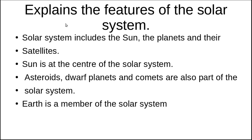Explain the features of the solar system. The solar system includes the sun, the planets and their satellites. The sun is at the center of the solar system. Asteroids, dwarf planets, and comets are also part of the solar system.